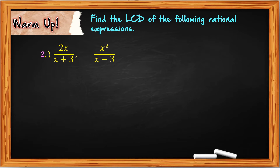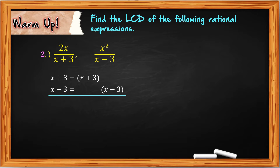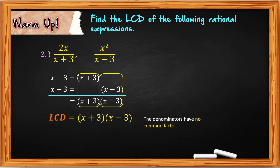For number 2, given 2x over x plus 3 and x squared over x minus 3. We get the LCD from the denominators. X plus 3 is a prime, so we just copy x plus 3. X minus 3 is also a prime, so we just copy x minus 3. We bring down all of them and multiply, so the LCD is the quantity x plus 3 times the quantity x minus 3. As you notice, the denominators have no common factor, therefore their product is the least common denominator.